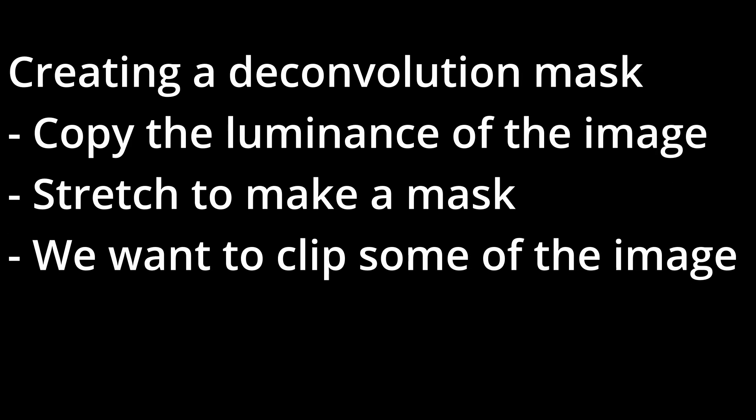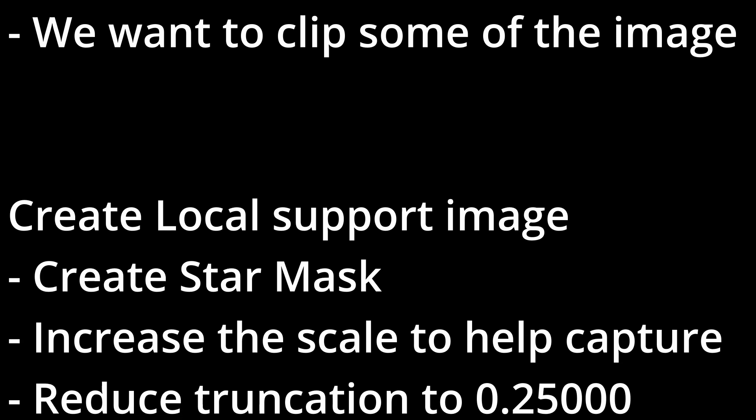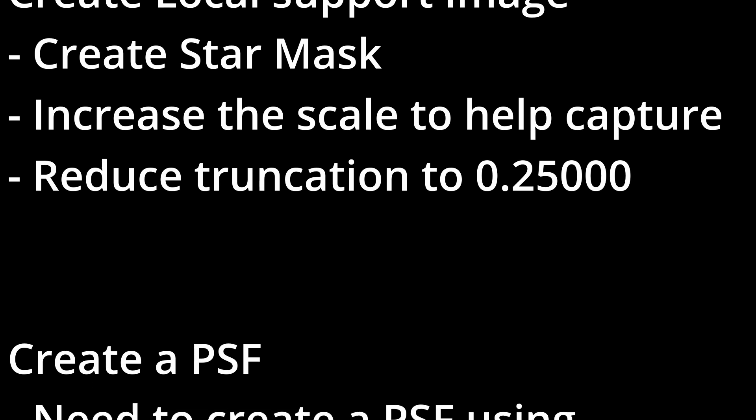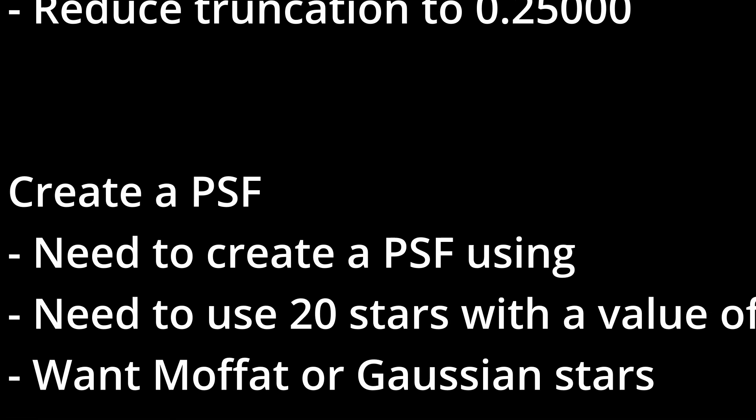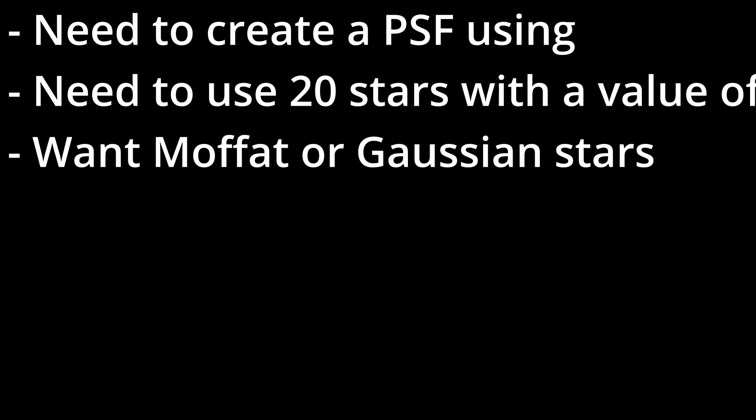If anybody has actually used deconvolution, it's a pretty complicated process. I've probably done it once or twice and I've had to write notes because I can't remember what you need to do. There are three things you've got to do: you've got to create a deconvolution mask by copying the luminance of an image and stretch that to make the mask. You then need to create a local support image, create a star mask, increase the scale to help capture larger stars, reduce truncation values and all that sort of thing. And then finally you create a point spread function, which you put into your deconvolution tool in something like PixInsight to counteract the atmospheric wobble and make your stars smaller. That's a hell of a lot of work just to make your stars smaller.